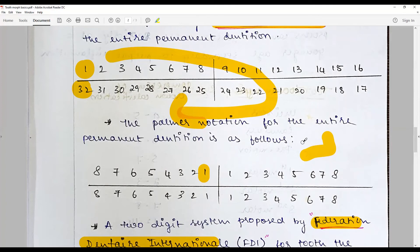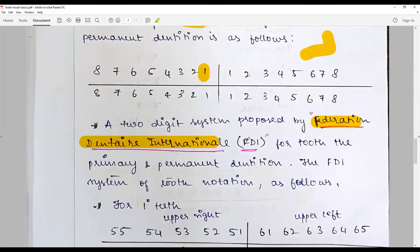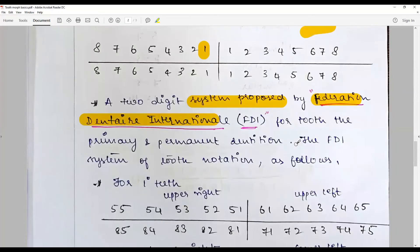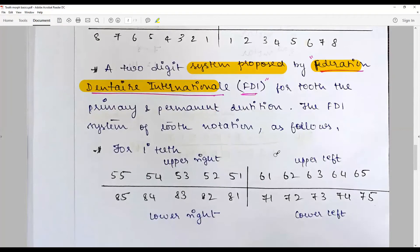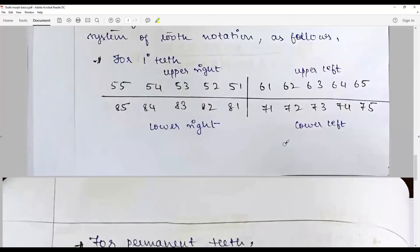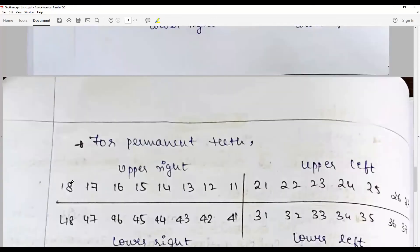Hence, a two-digit system was proposed by the FDI for both dentitions. Here again, it is a two-digit system. The first digit denotes the quadrant, the second digit denotes the tooth number. The first digit is upper right quadrant denoted by quadrant 1.